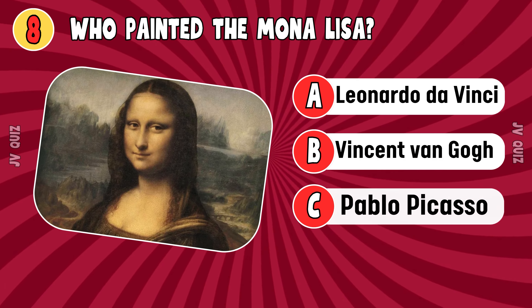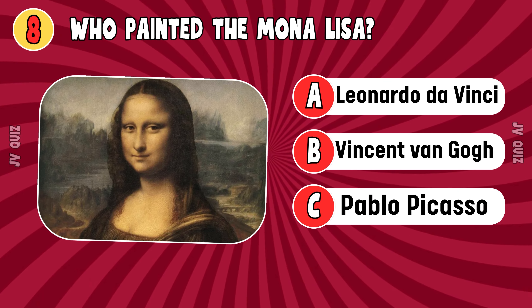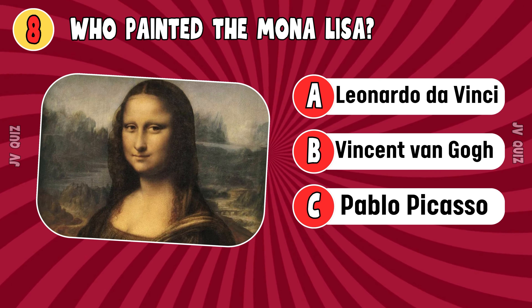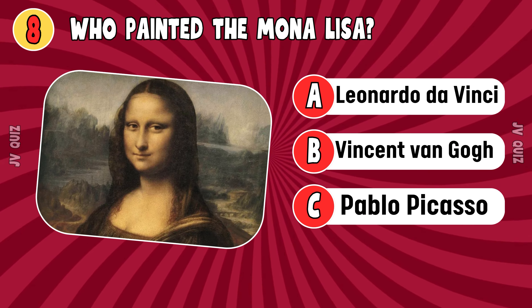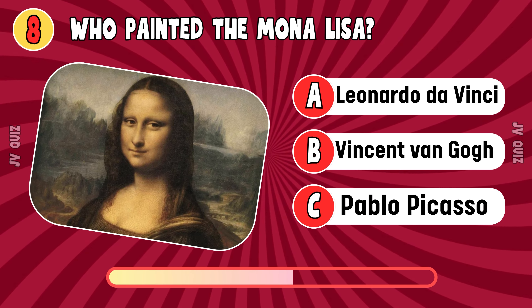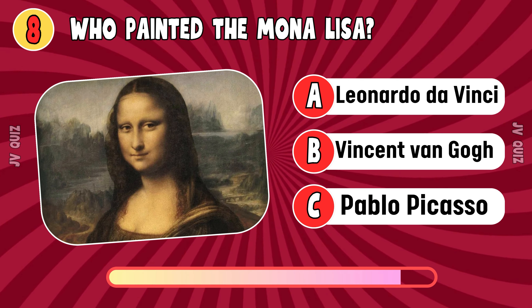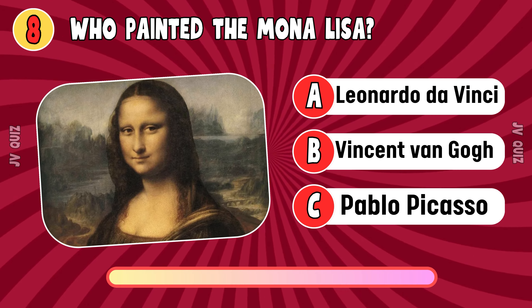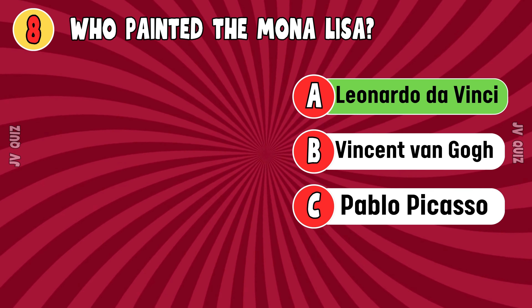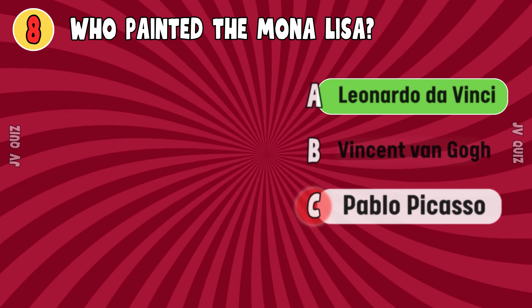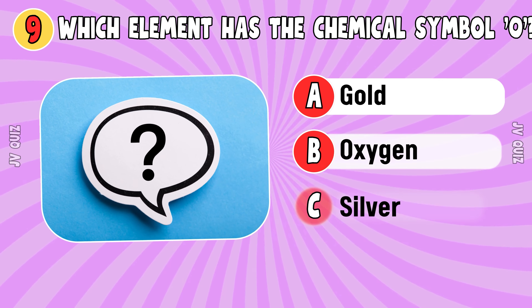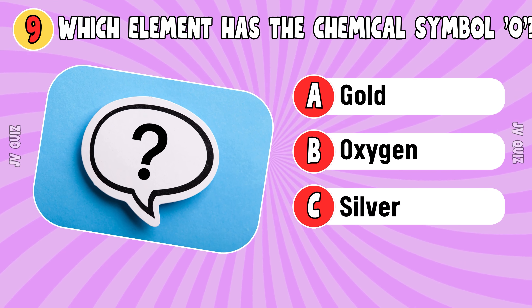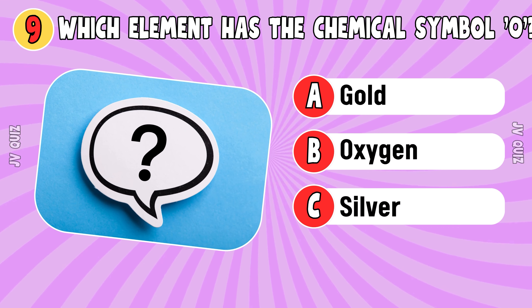Who painted the Mona Lisa? Leonardo da Vinci. Which element has the chemical symbol O? Oxygen.